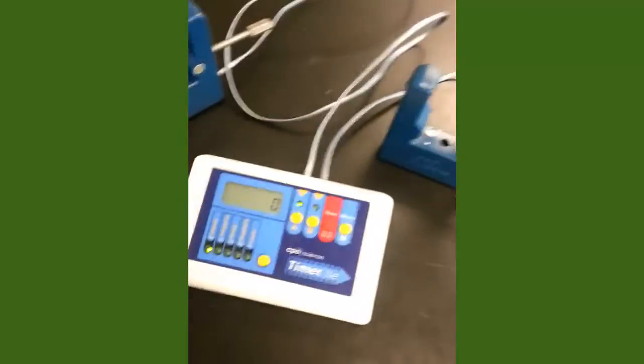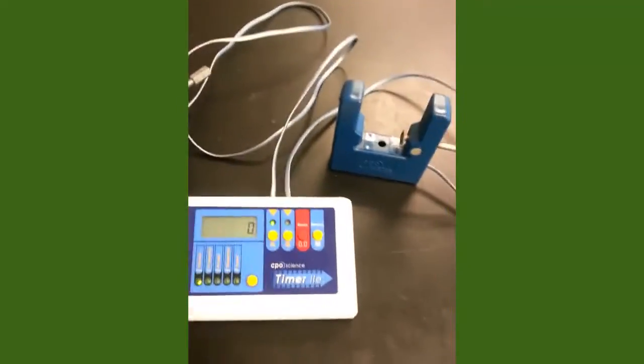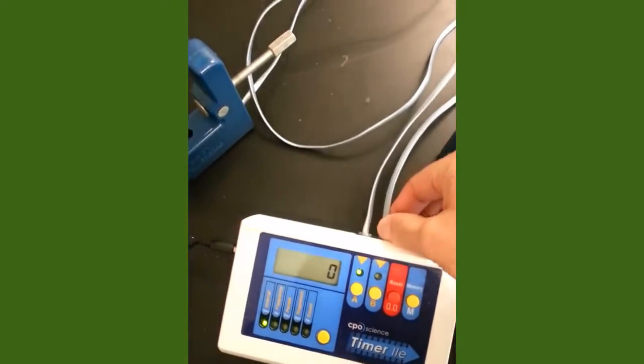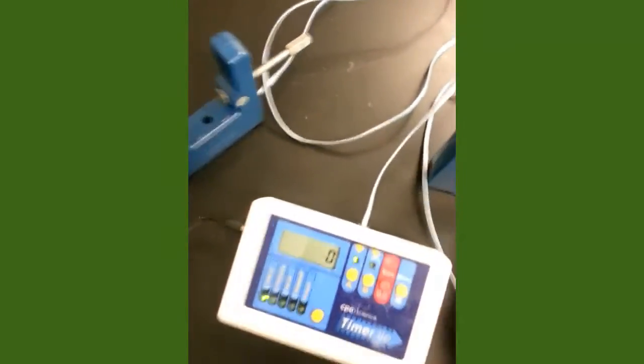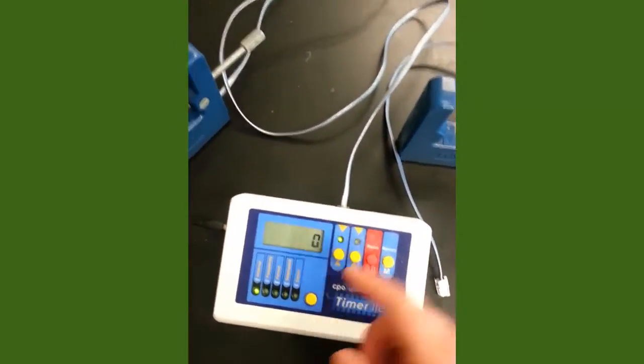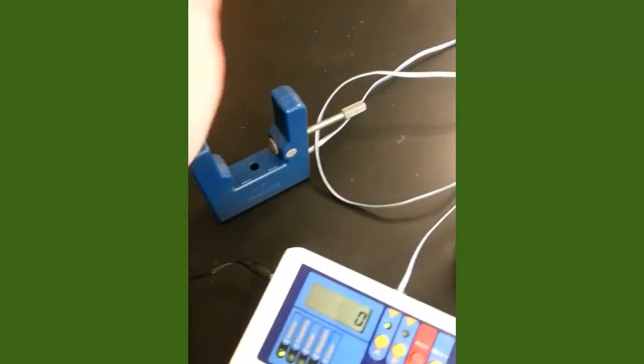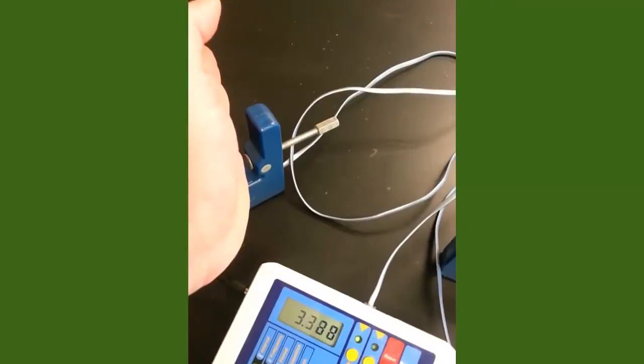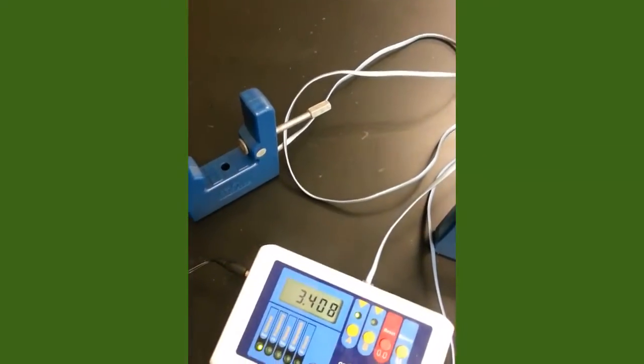Now I want you guys to know that this device here will also work if only one of the photogates is plugged in. For example, if I unplug here photogate B, photogate A is still plugged in and you can see that the light is on for photogate A. If I put my hand through photogate A, it starts the timer and as soon as my hand leaves, photogate A stops.